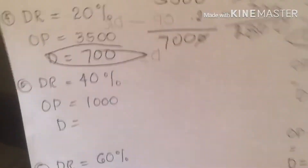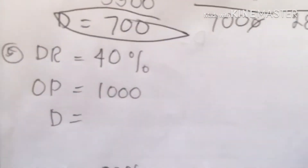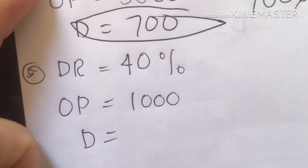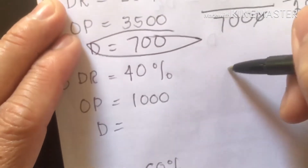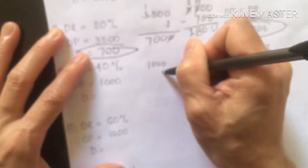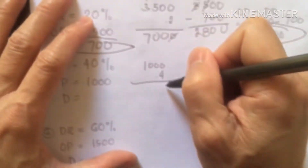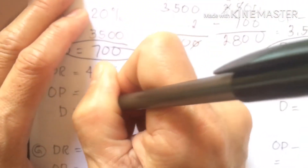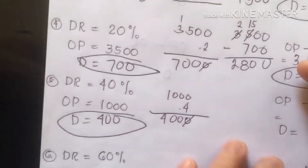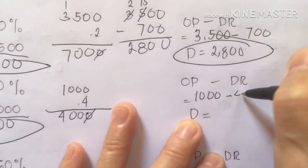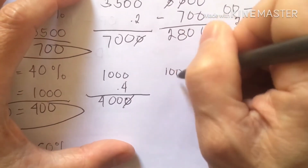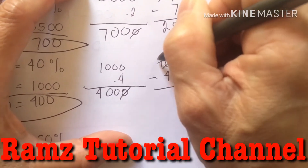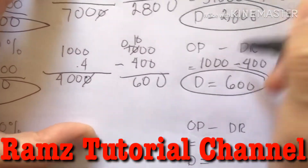Number 5: we have 40% discount and original price is 1,000. We multiply: 1,000 times 40% (0.4). Don't forget to convert to decimal form. Our discount is 400. We subtract 1,000 minus 400: 0 becomes 10, 1 becomes 0, so this is 6. Our payable amount is 600. That's amazing!